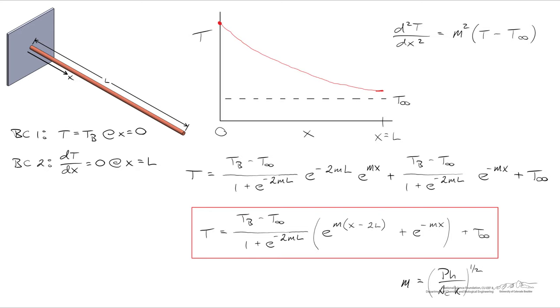So the concavity begins to go to 0. If you could imagine, if we made the rod a considerable amount longer, the temperature will eventually asymptotically approach T infinity, and at that point it looks essentially linear because the concavity goes to 0.